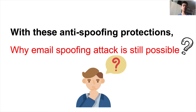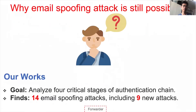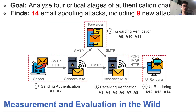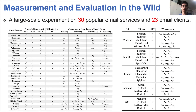However, with these existing spoofing protections, we wonder why email spoofing attacks are still possible. To address this question, we conducted our research. We systematically analyzed four critical stages of the authentication chain: sending authentication, receiving verification, forwarding verification, and UI rendering. We found 14 email spoofing attack techniques, including 9 new attacks. To understand the real-world impact, we conducted a large-scale scan experiment involving 30 popular email services and 23 email clients with billions of users in total.